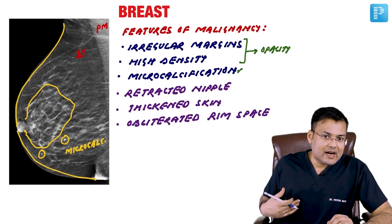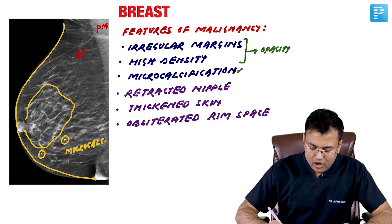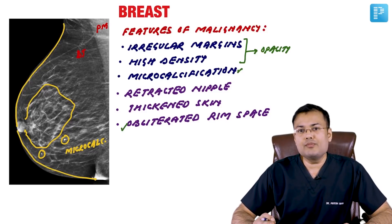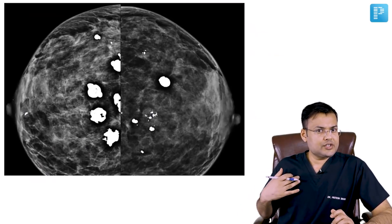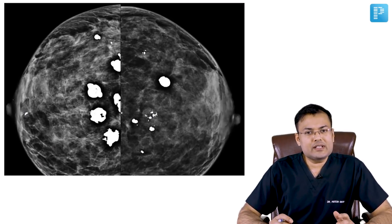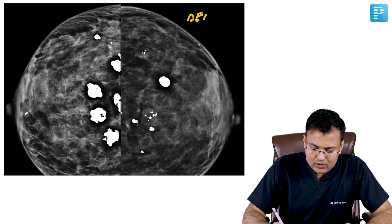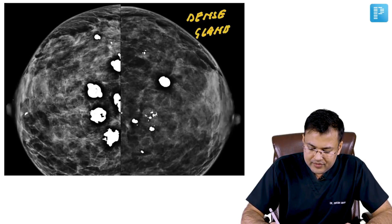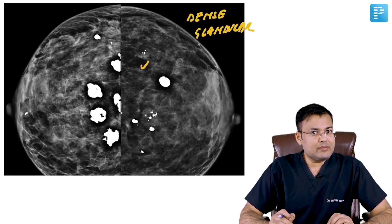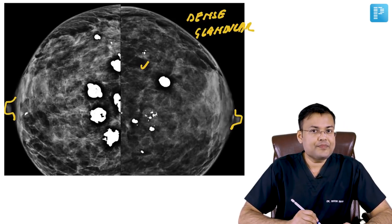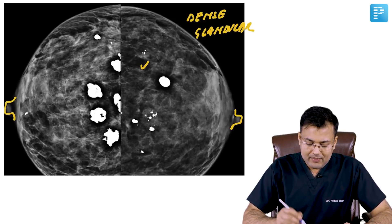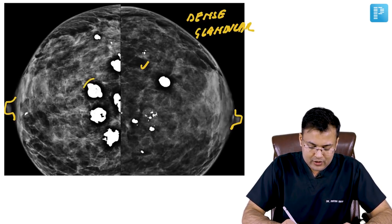Associated changes in the breast include retracted nipple, thickened skin, and obliterated retro mammary space. In this film you can see the breast is dense and glandular. You can also notice that the nipple is normal.